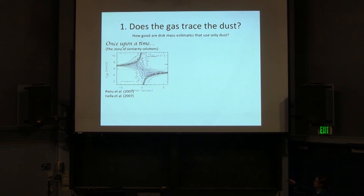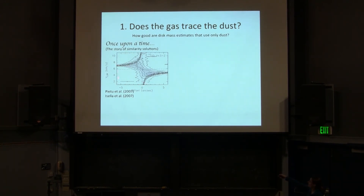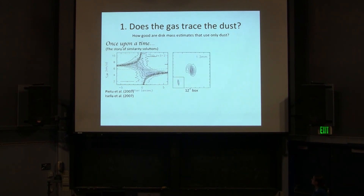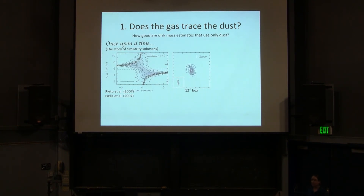Here's a typical gas observation — a position-velocity diagram. This is position on one axis and velocity on the other. You can see the disk extends to a diameter of about 12 arc seconds across on the sky. Gas disks are pretty large — extending out to maybe 10 arc seconds for some of the closest biggest disks. But if you look at the dust — 1.3 millimeter continuum emission very close in frequency to the CO J=2-1 transition — these are the same disk, but it looks like the gas extends to much larger extents on the sky than the dust.